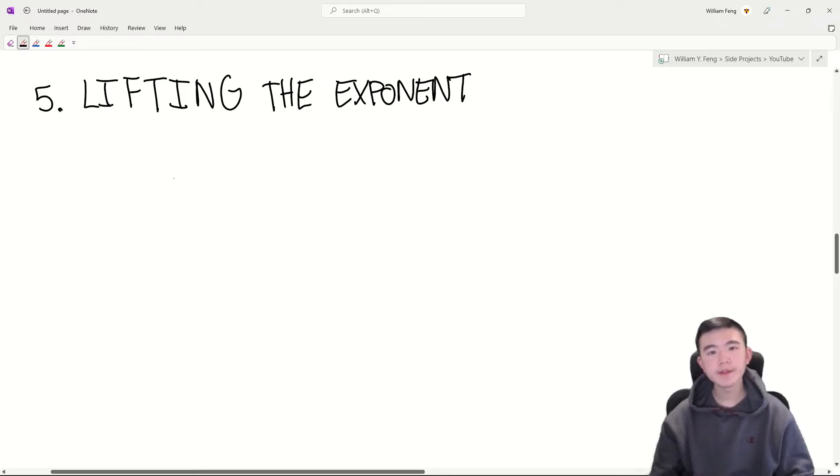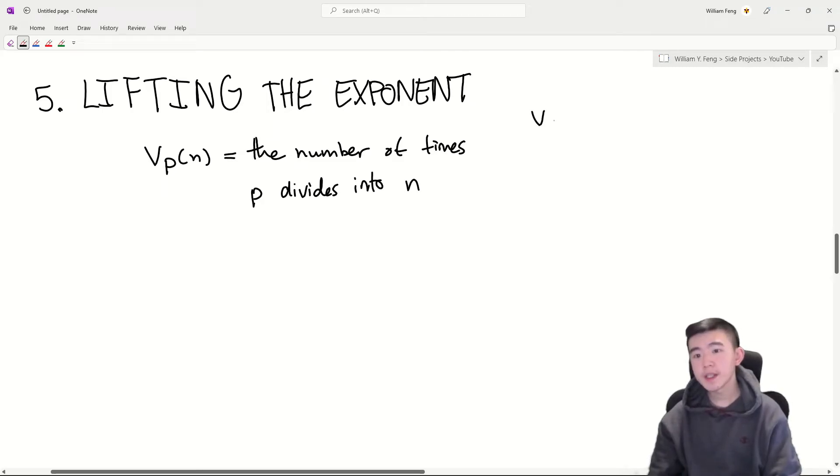Number 5 is lifting the exponent. This is a lemma concerned with the vp function. And no, this is not really a v. It's some Greek letter, but I don't know what it is, so I'm just going to say vp. This is equal to the number of times that the prime p divides into n. For instance, v2 of 1024 is equal to 10, v3 of 18 is equal to 2, and v5 of 100 is equal to 2.